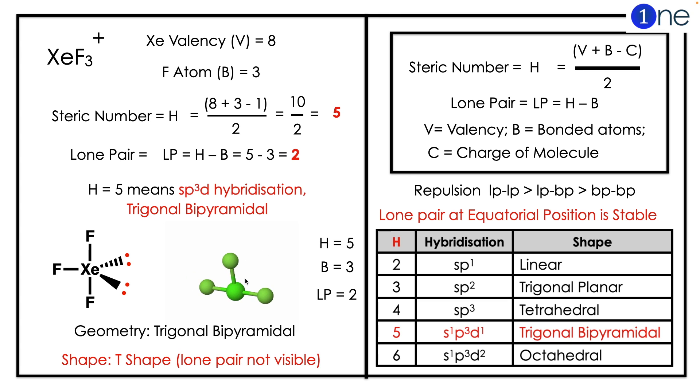The lone pair will be H minus B, which equals 2. H = 5 means sp3d hybridization, which is trigonal bipyramidal. The lone pairs are not visible, so if you look at it, it's a T-shape. You can understand the shape by the animation.